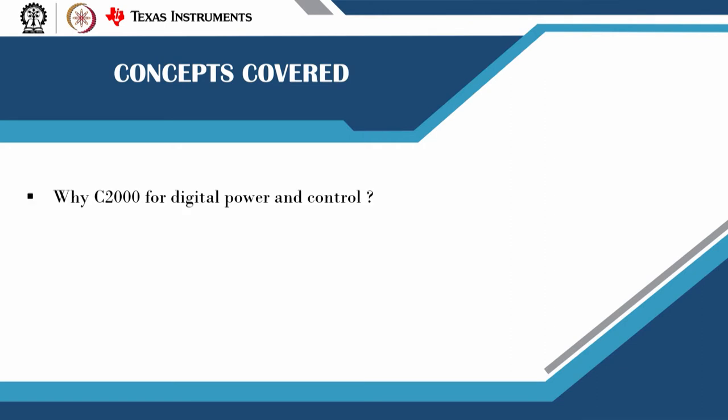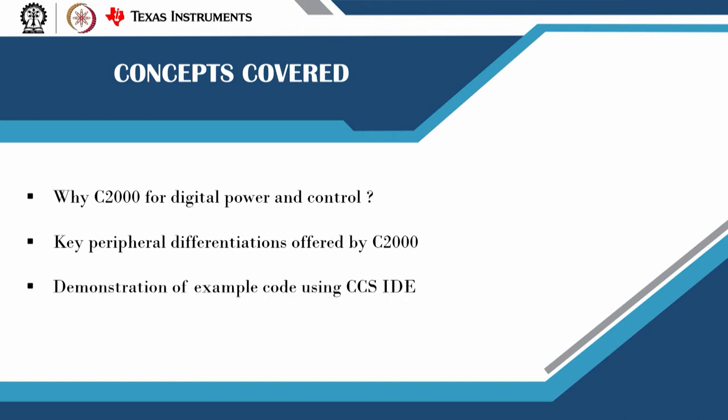The concepts covered will be: why do you need a C2000 for digital power as well as control? What are the key peripheral differentiations offered by the C2000 device? And lastly, we will give a brief overview of a demonstration of example code using the CCS IDE.